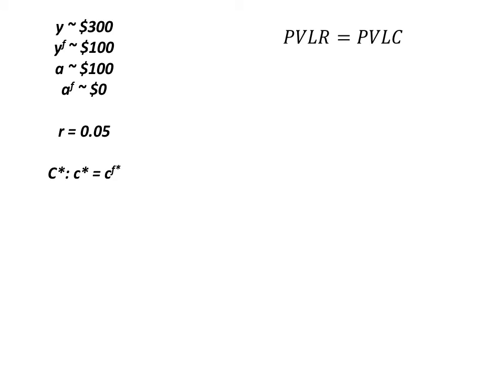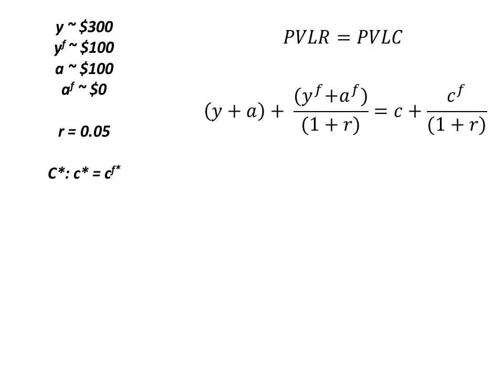From the previous video we showed how the present value of lifetime resources has to equal the present value of lifetime consumption in our model. We were able to find this equation where the left-hand side shows current income and wealth plus the discounted value of future income and wealth has to equal current consumption plus the discounted value of future consumption.